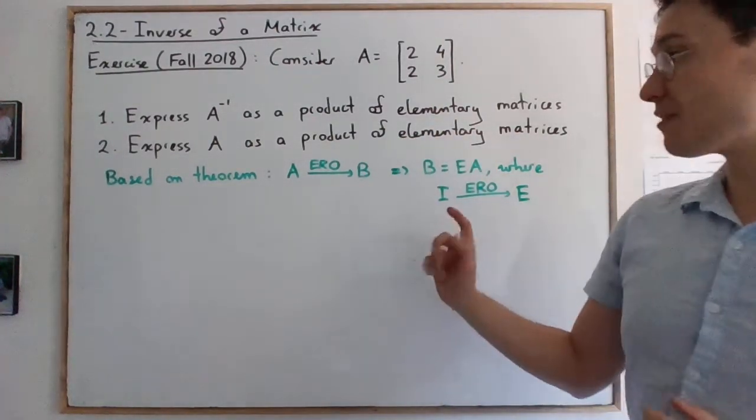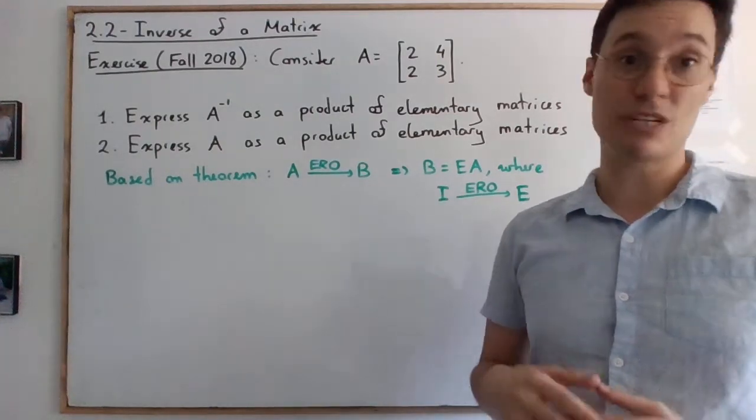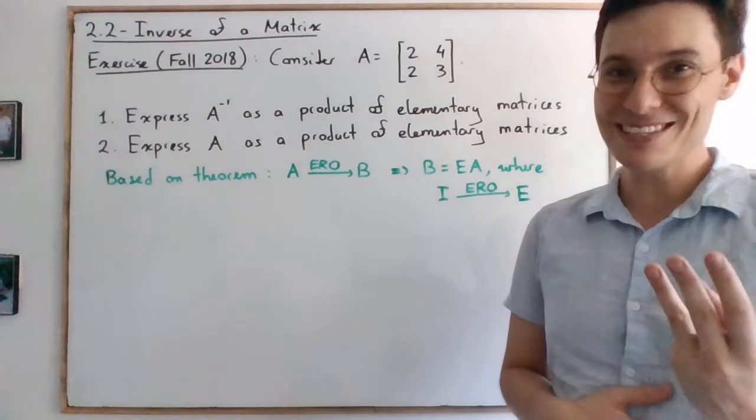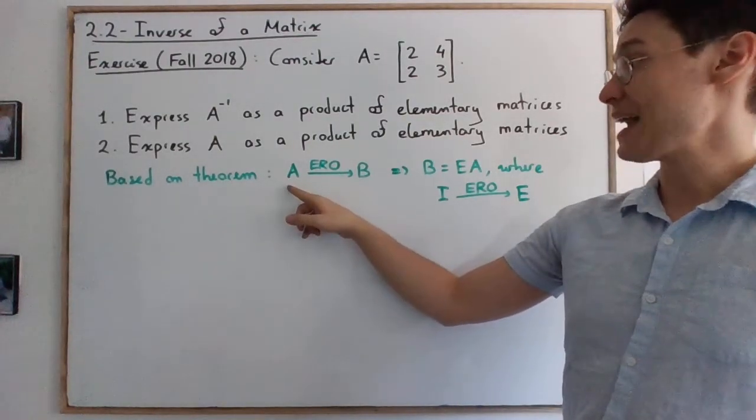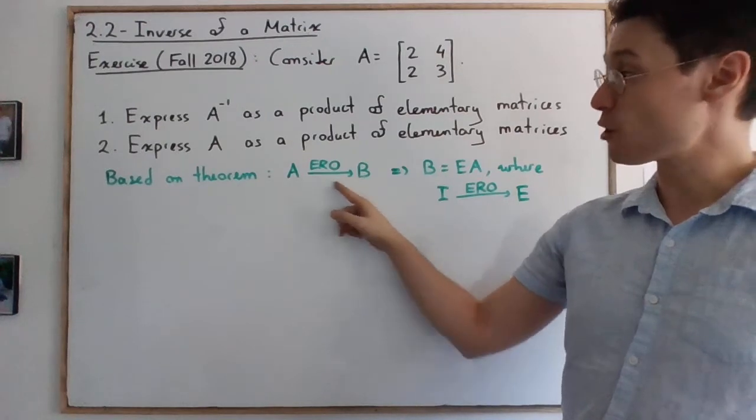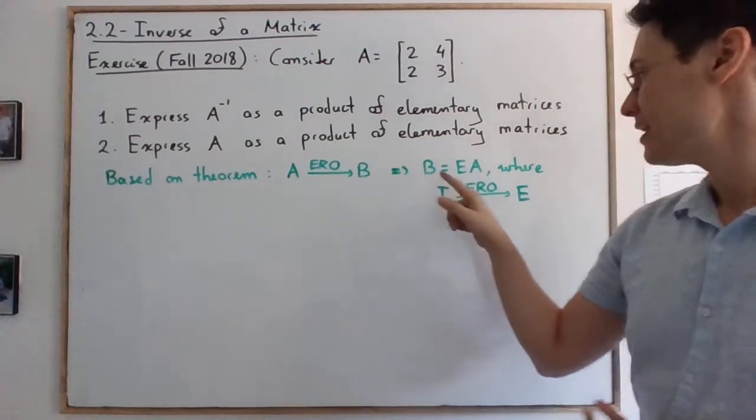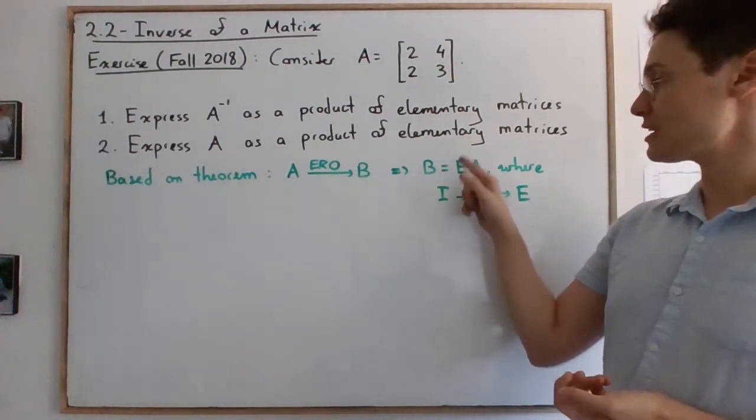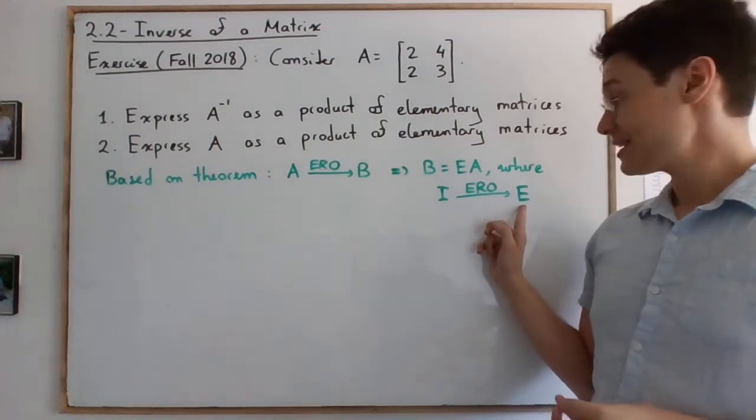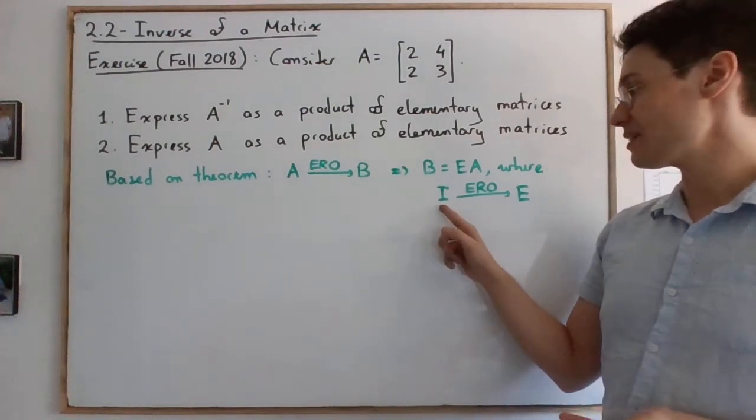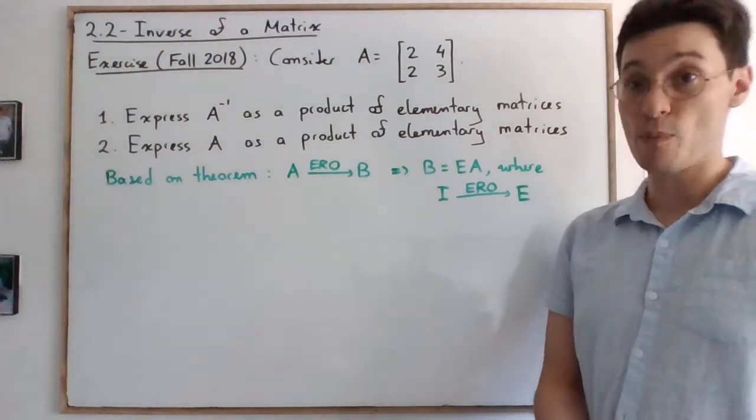Okay, so first of all, before we begin, it's based on the theorem that was proved in three YouTube videos and that we also have seen in class. That if we perform an elementary row operation to bring A to a matrix B, then B is equal to E times A, where the elementary matrix is the one that we get from I by performing the same elementary row operation.